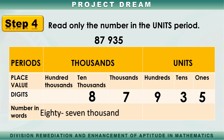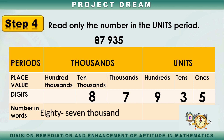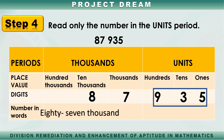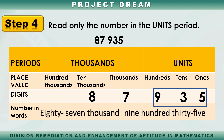Step 4: Read only the number in the units period. So how do we read the number in the units period? It is 935. We are only going to write 935 here. We do not mention the name of the period when it is in units.